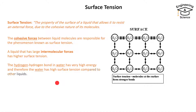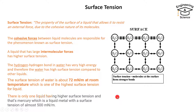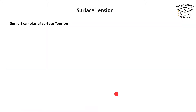The hydrogen bond in water has very high energy, and therefore water has high surface tension compared to other liquids. The surface tension of water is about 72 millinewtons per meter at room temperature, which is one of the highest surface tensions for a liquid. The only liquid with higher surface tension is mercury, a liquid metal, with a surface tension of almost 500 millinewtons per meter.